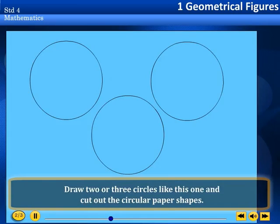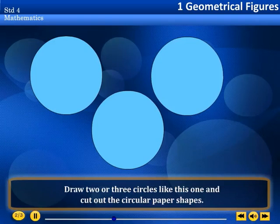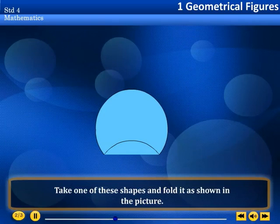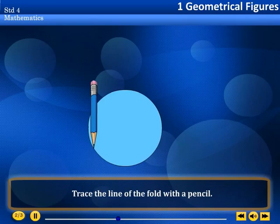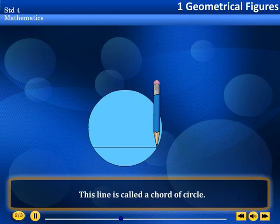Draw two or three circles like this one and cut out the circular paper shapes. Take one of these shapes and fold it as shown in the picture. Trace the line of the fold with a pencil. This line is called a chord of the circle.